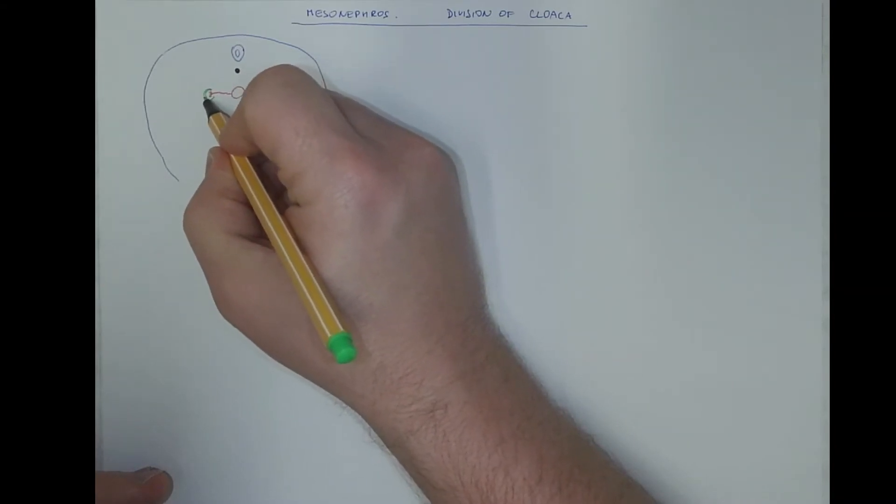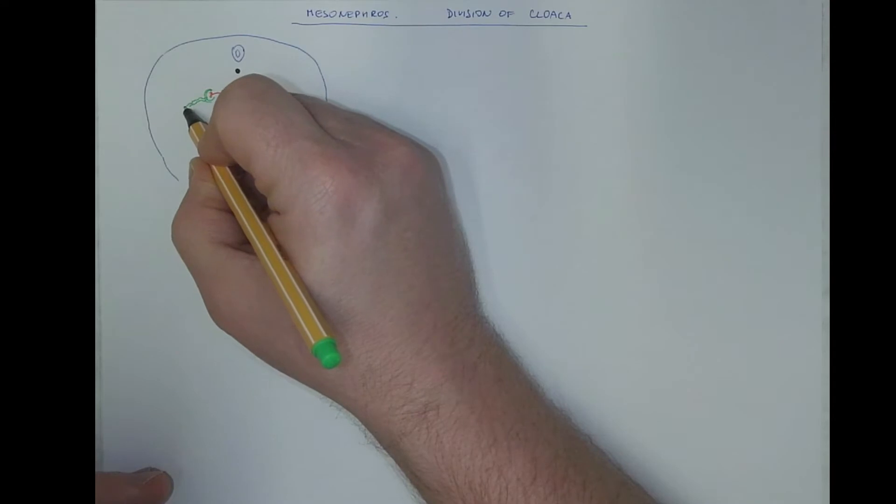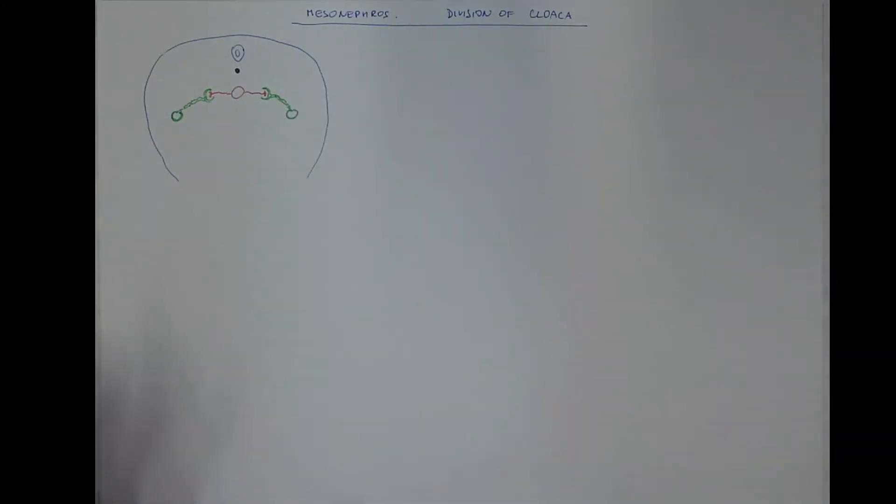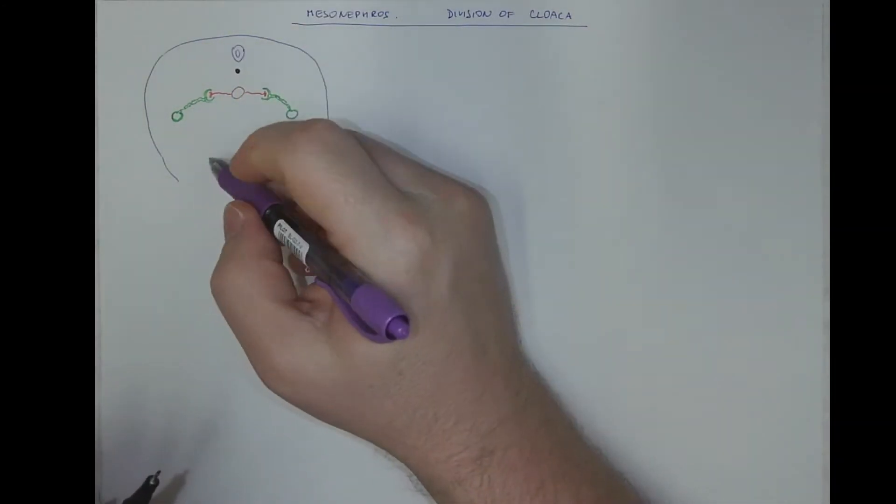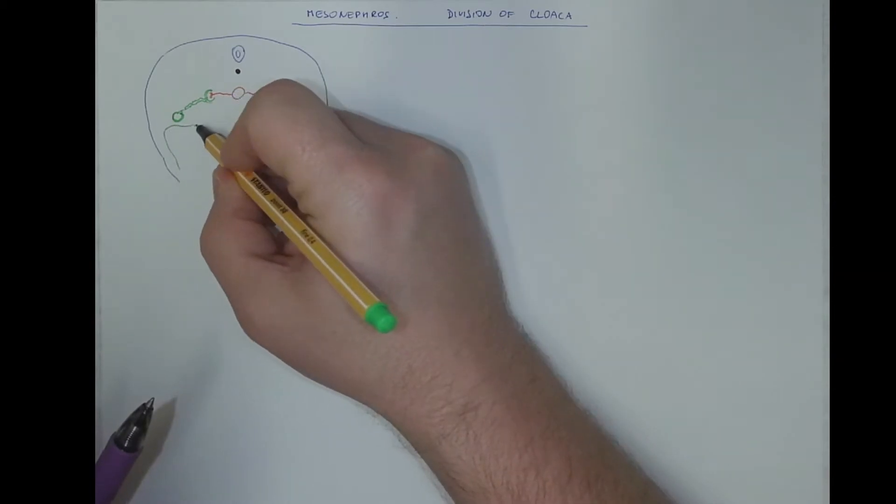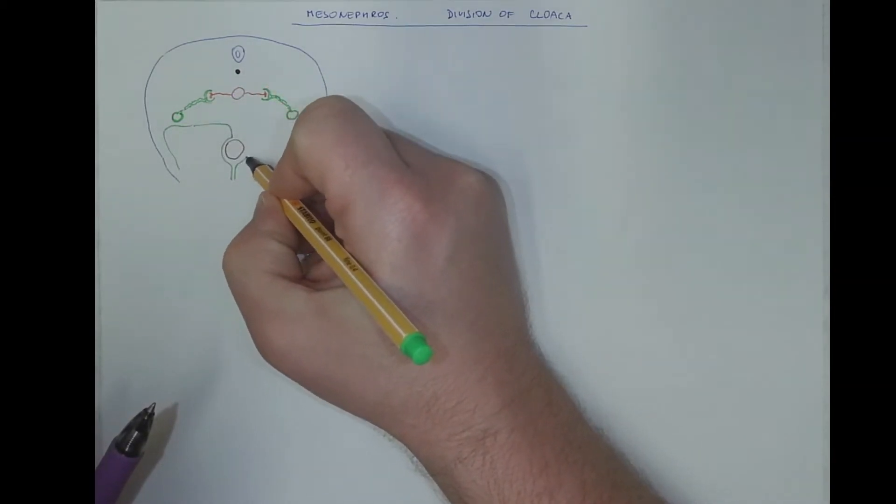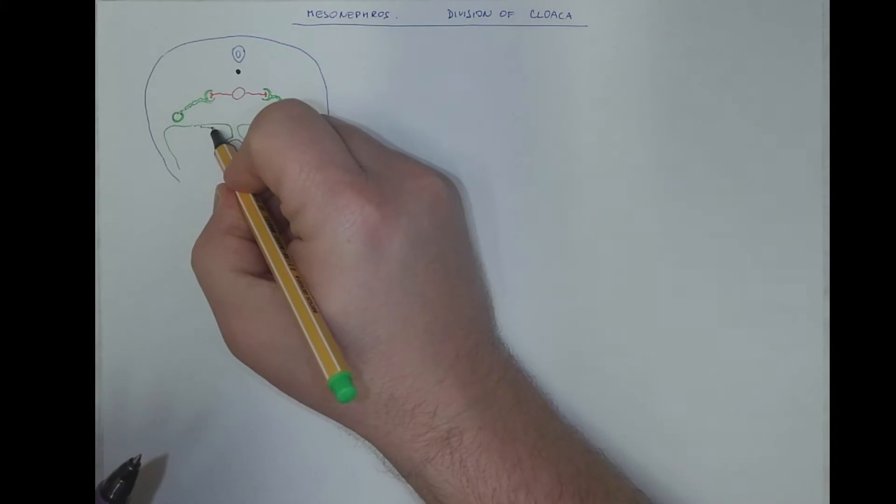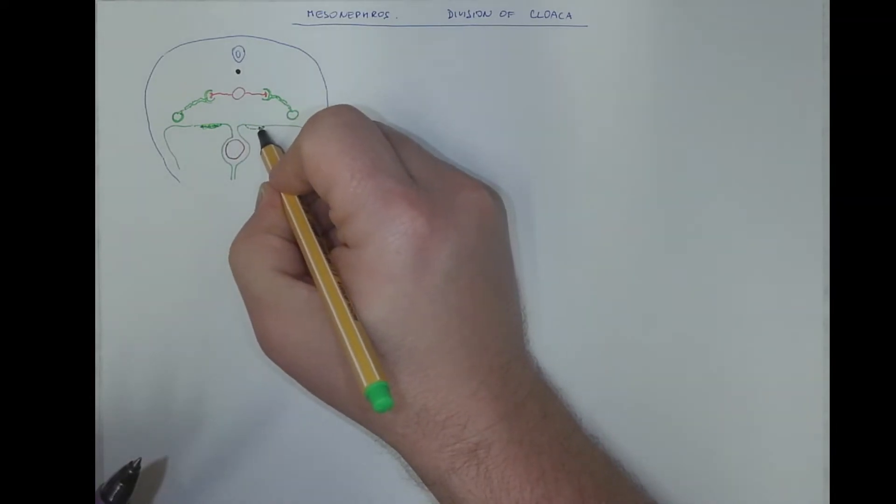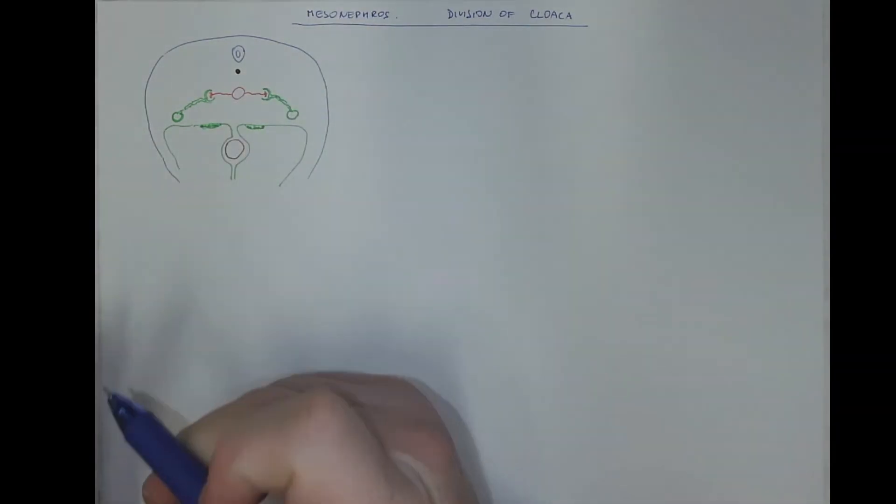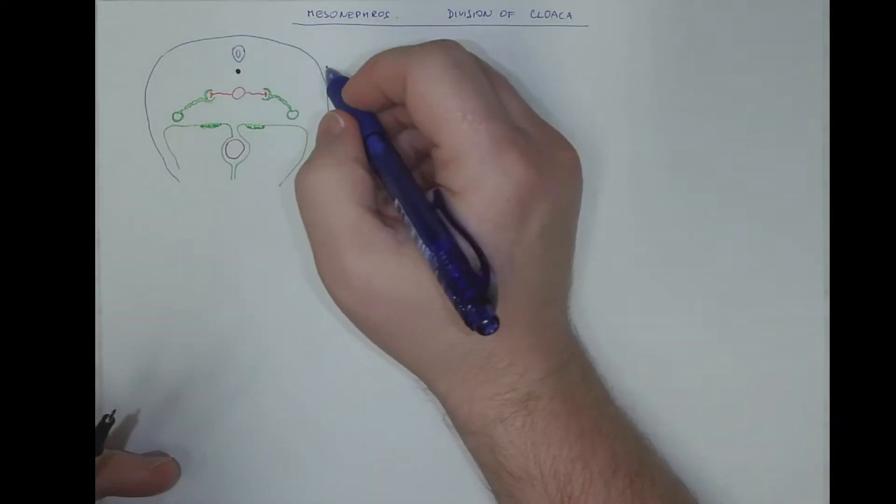On both sides of the human body we got the mesonephric tubules and the mesonephric duct. Here there is the gut tube and the coelom cavity, the dorsal mesentery, ventral mesentery. The dorsal wall of the coelom cavity, the mesoderm is proliferating and thickening, forming a structure called the genital ridge, which will give rise to the gonads.